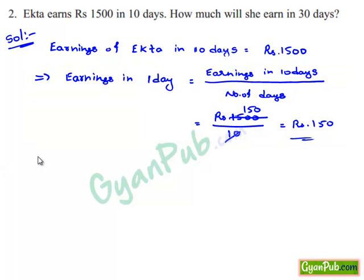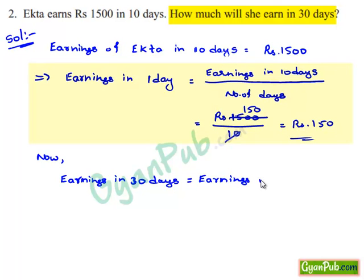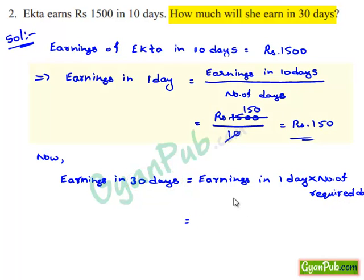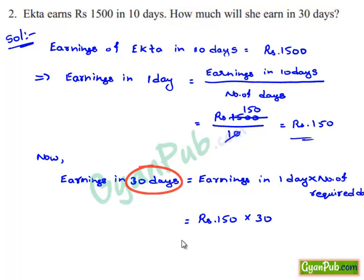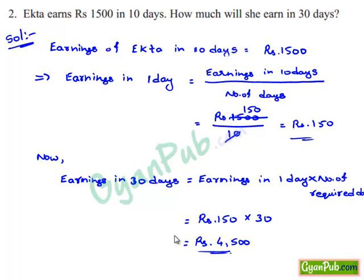Now we have to find earnings in 30 days, which is nothing but earnings in 1 day multiplied by number of required days. This is equal to Rs. 150 multiplied by 30, which gives Rs. 4500. Therefore, earnings of Ekta in 30 days is Rs. 4500.